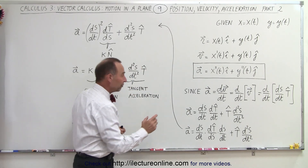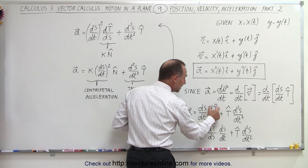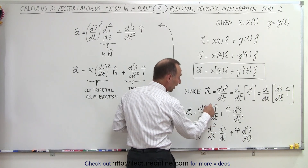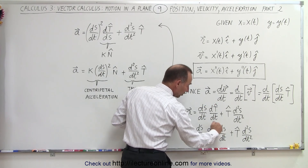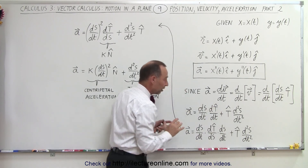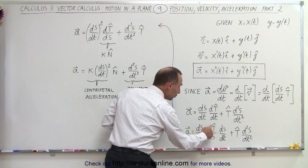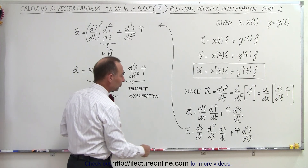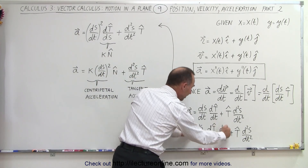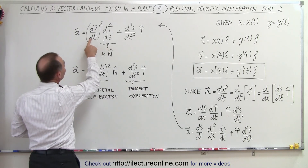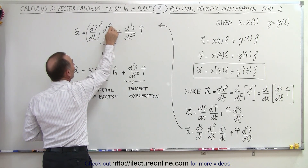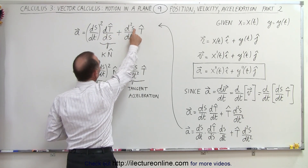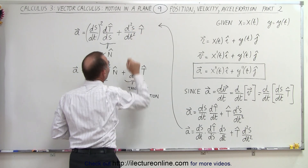Then we use the following conversion. Instead of writing dT/dt, the derivative of the unit tangent vector with respect to time, we write it as dT/ds times ds/dt. Notice here if we cancel the ds's, we get back what we started with. But now we have the derivative of the unit tangent vector with respect to s — moving along the curve. We also see that we have ds/dt times ds/dt, so we have (ds/dt) squared. So we have (ds/dt) squared times dT/ds, plus the second derivative of s with respect to t times the tangent unit vector.